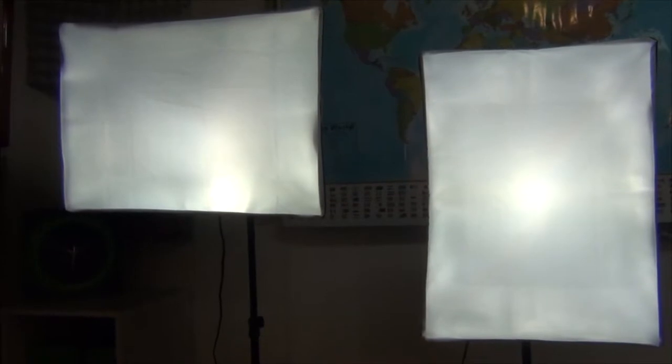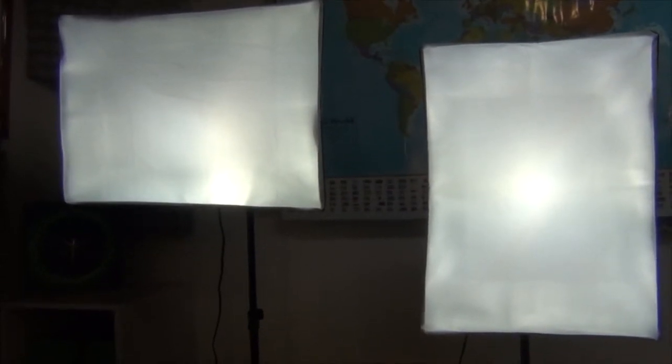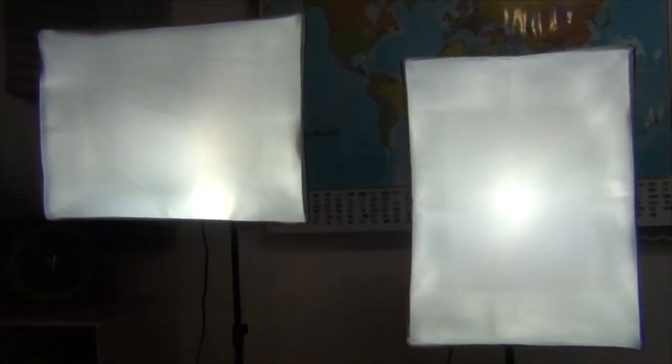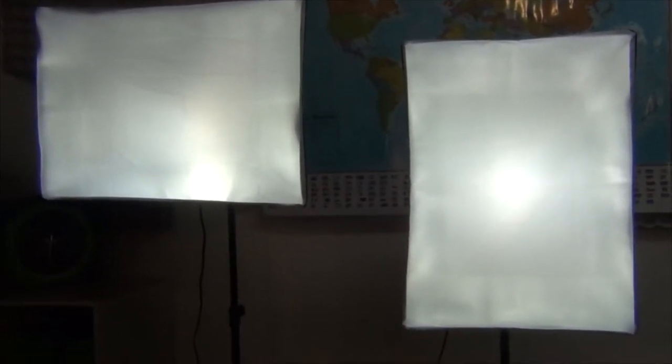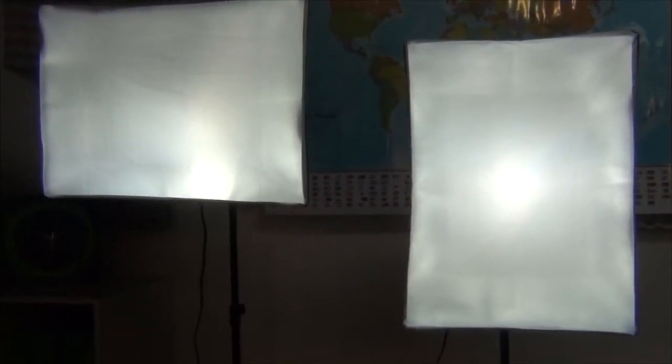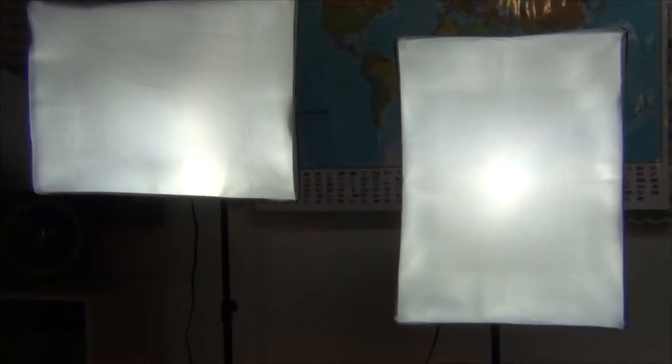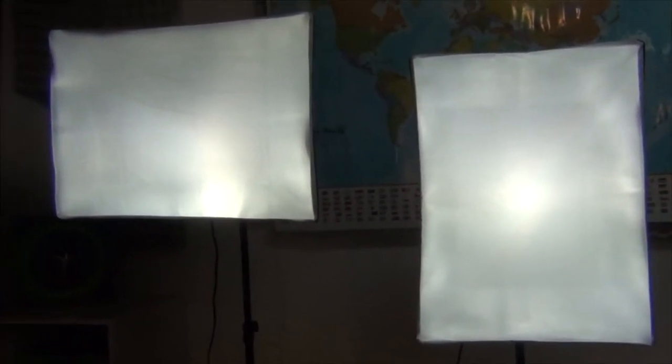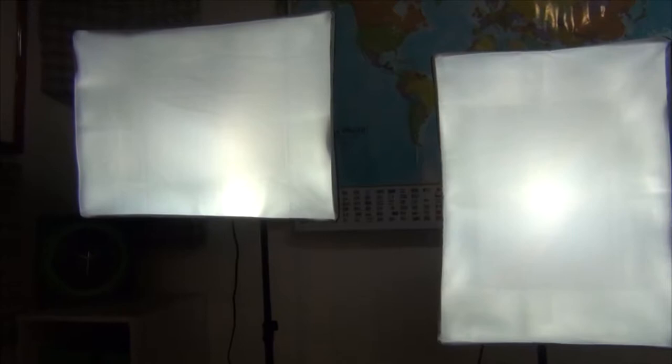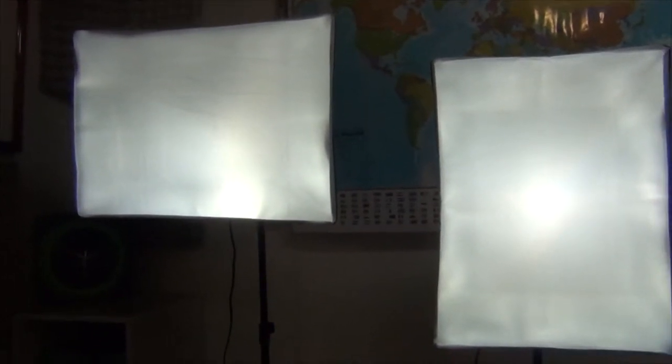But you can turn on one, two, three, four, or all five lights at a time. And you can see the light box on the right is configured in what you would think of as maybe a portrait configuration. And the light box on the left is a landscape configuration. And we'll show you how to assemble these light boxes.